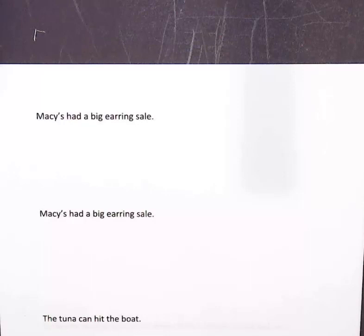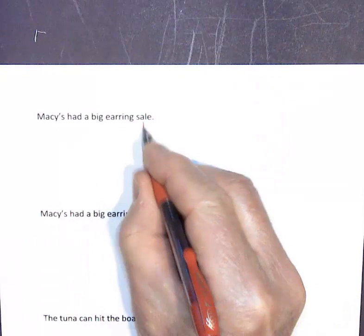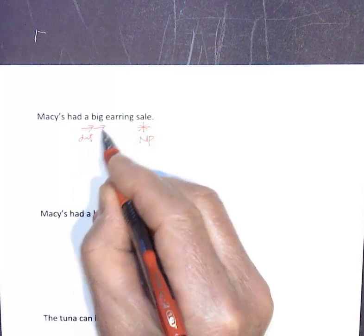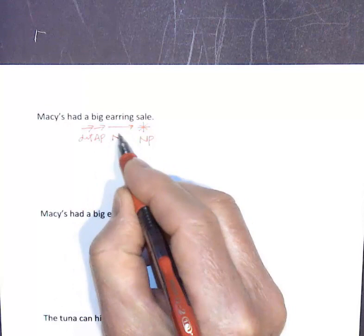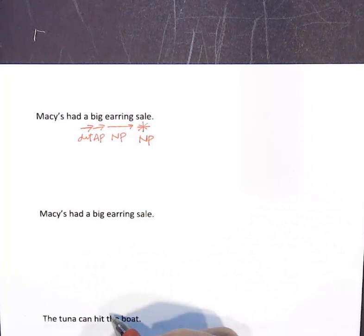'Macy's had a big earring sale' — there are two ways to interpret this. In the first parsing, 'sale' is the noun phrase head and the object of the sentence. 'A' is a determiner, 'big' is an adjective phrase modifier, and 'earring' is a noun phrase modifier. This means that Macy's had a big sale, and the sale was on earrings.